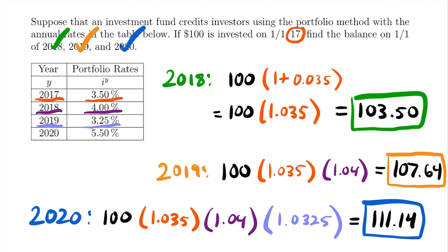That completes the first example. The general idea of the portfolio method is straightforward: the most important thing to remember is to know when the original investment was made, because depending on that year, you use different portfolio rates to accumulate interest. Before ending this lesson, let's look at one more example with a slight variation in how the portfolio rates are given, as sometimes these tables look a little different.